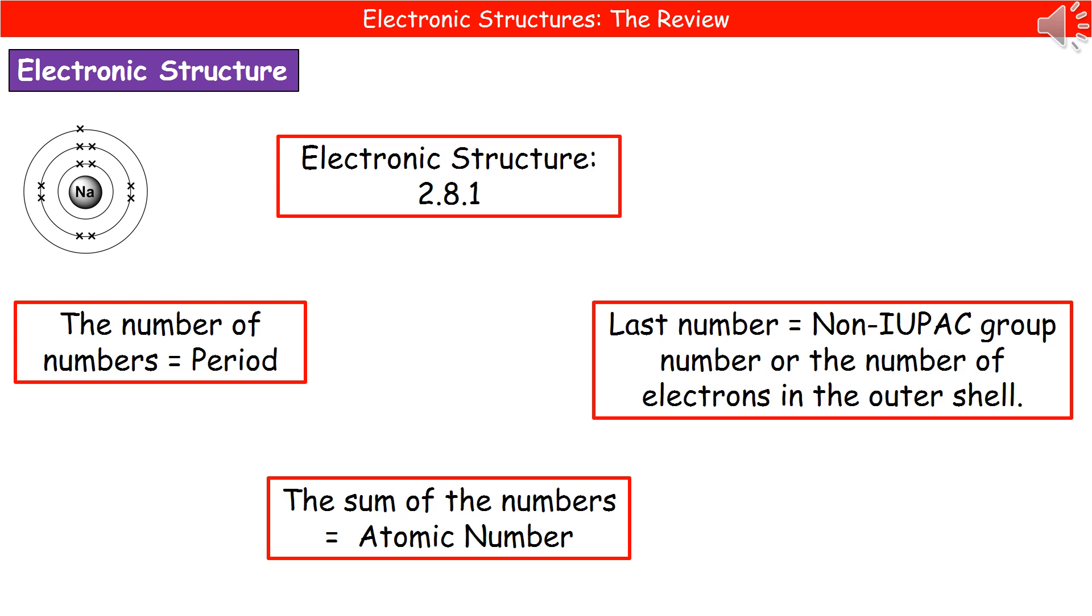And then finally, if you add up all those numbers, we've got our atomic number. So two plus eight plus one gives us 11, which is the atomic number of sodium.